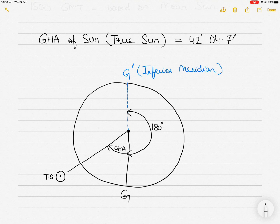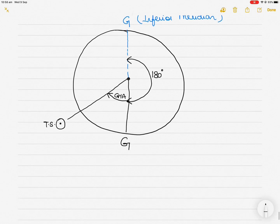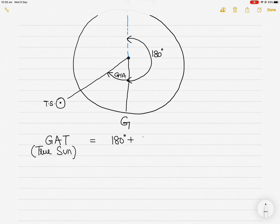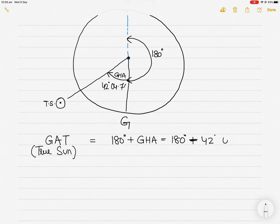For time purposes we add 180 degrees. So the Greenwich Apparent Time angle is based on the true sun and equals 180 degrees plus the GHA, which is 180° + 42° 04.7' = 222° 04.7'. But this is an angle, not yet time.